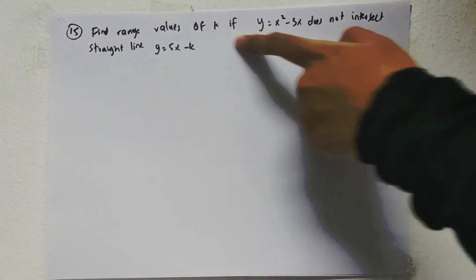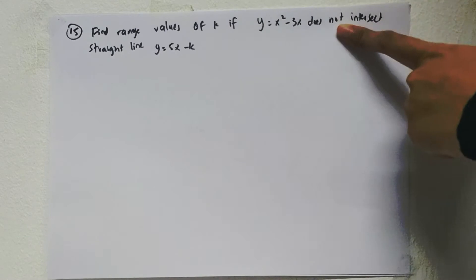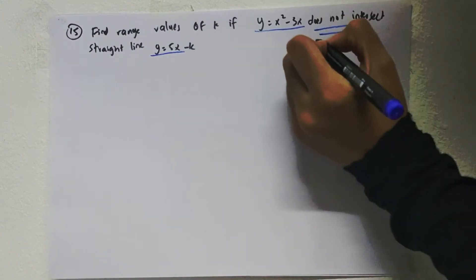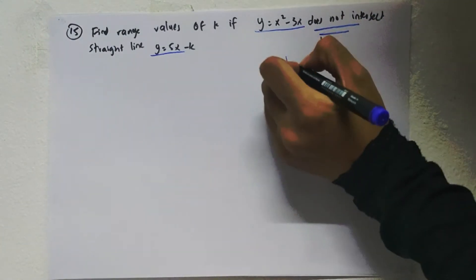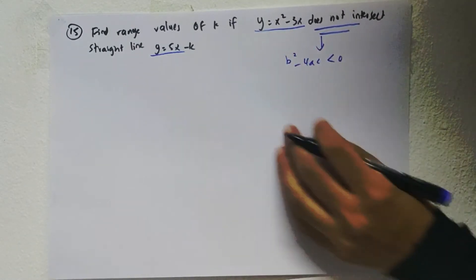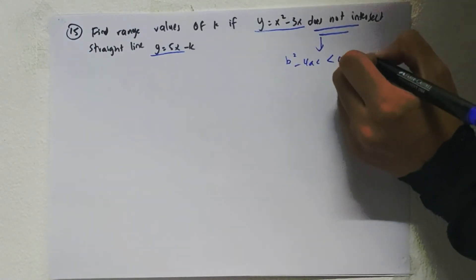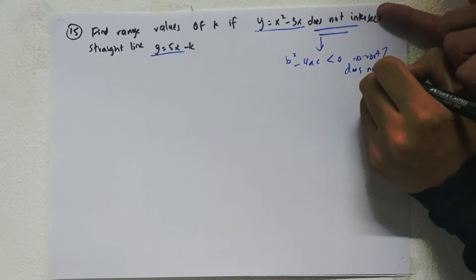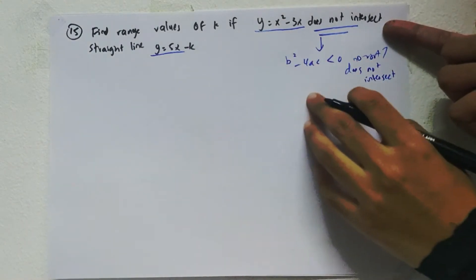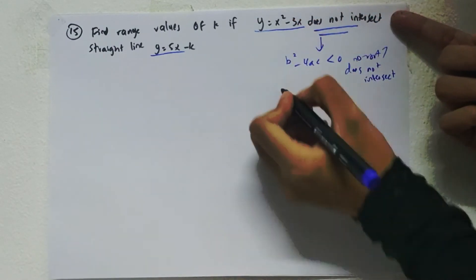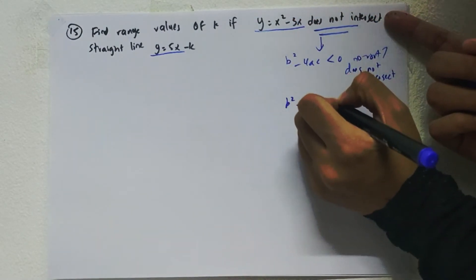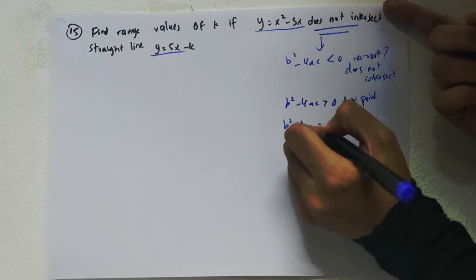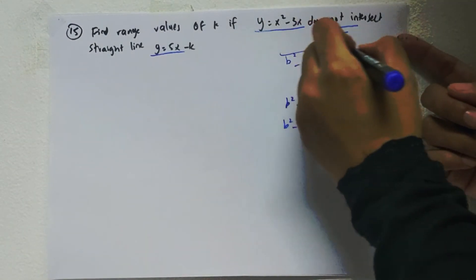Find the range value of k if y equals x squared minus 3x does not intersect the straight line. We have two equations and does not intersect means b squared minus 4ac is smaller than zero — this means no root or does not intersect. If it intersects at two points then b squared minus 4ac is greater than zero, and if one point, b squared minus 4ac is equal to zero.